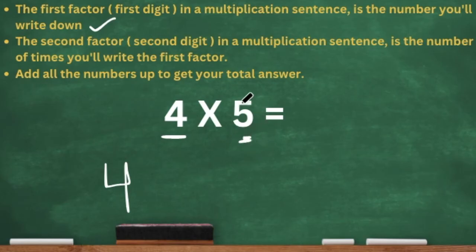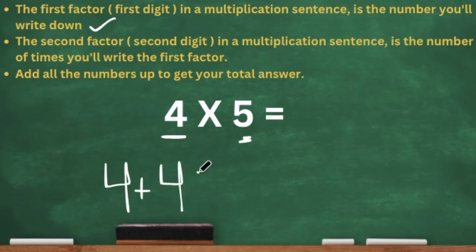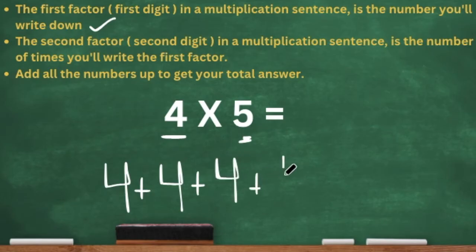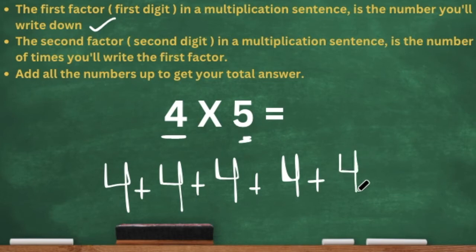So we have five for my second factor, four for my first factor. So we're going to write four five times. Here we go: one, two, three, four, five. And as you're writing each of the digits, you're going to put that addition symbol in between, because remember, this is repeated addition. That four is repeating — it's repeating five times.